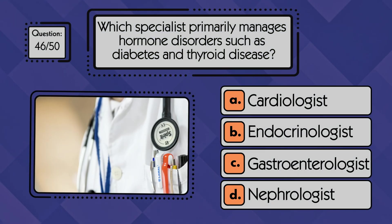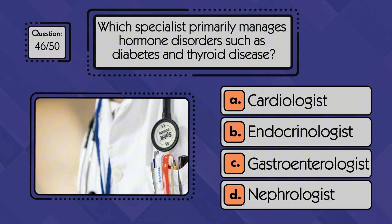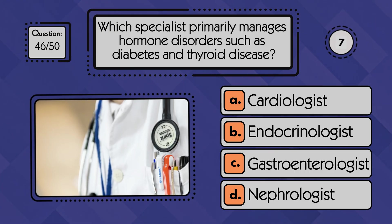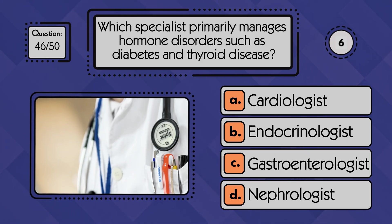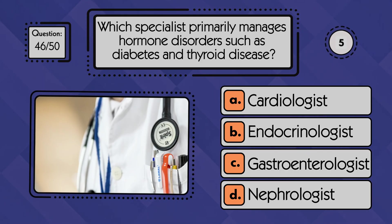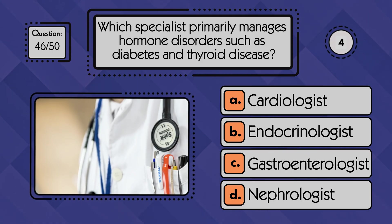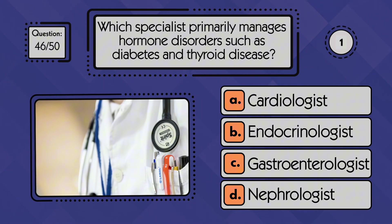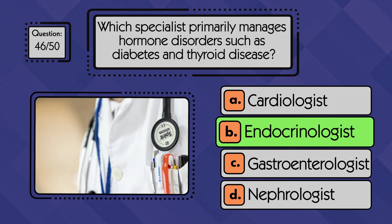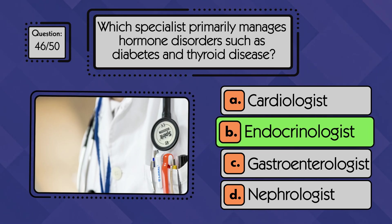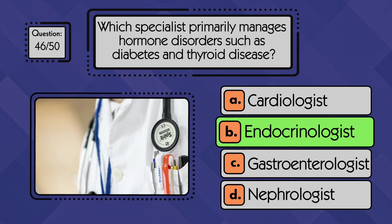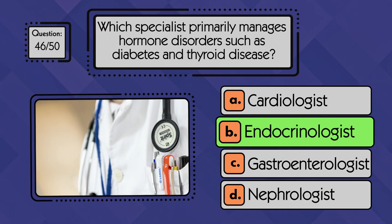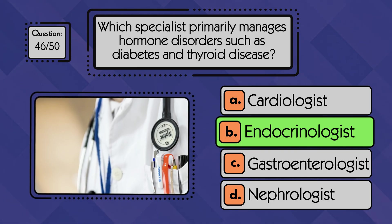Which specialist primarily manages hormone disorders such as diabetes and thyroid disease? An endocrinologist is the specialist who diagnoses and treats hormone-related disorders, including diabetes and thyroid conditions.